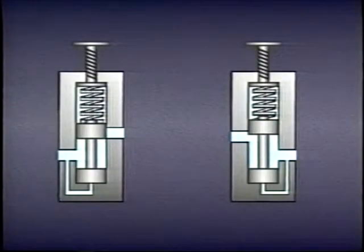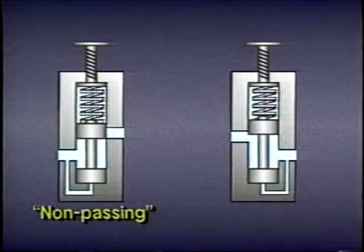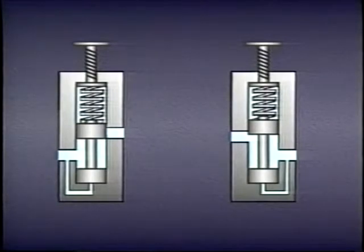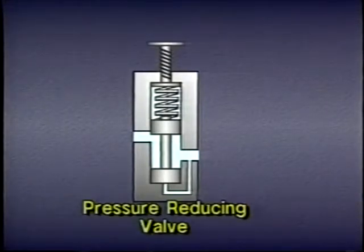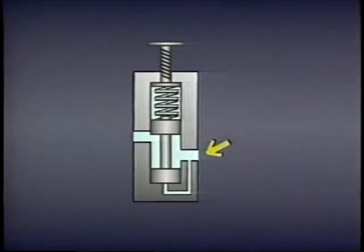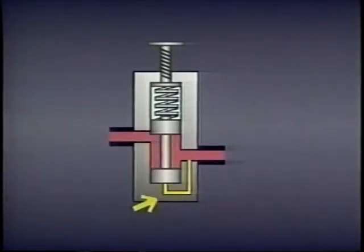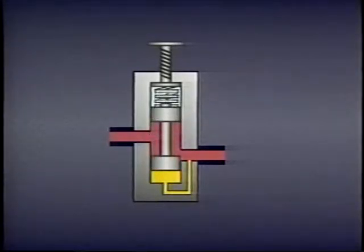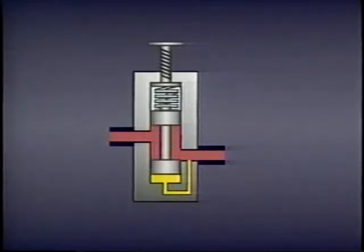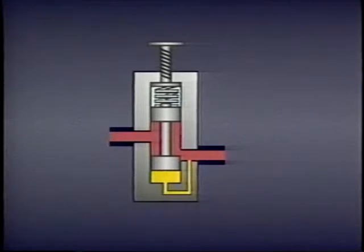All the pressure control valves seen so far have been normally non-passing valves which sense pressure directly. There are also normally passing valves which sense pressure directly — these are called pressure reducing valves. A pressure reducing valve works by responding to pressure changes at the secondary port rather than the primary port. When pressure through an internal pilot passage exceeds the spring pressure on the spool, the spool moves, restricting flow through the valve and reducing pressure on the secondary side. If pressure drops, the spring pushes the spool back, increasing the pressure. During normal system operation, the spool balances at an intermediate point and maintains a constant pressure on the secondary side.